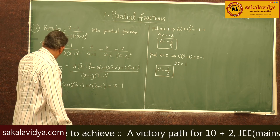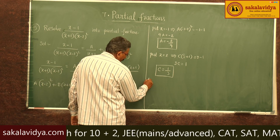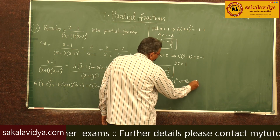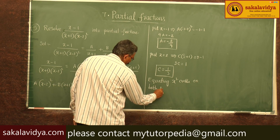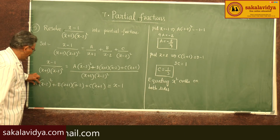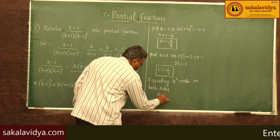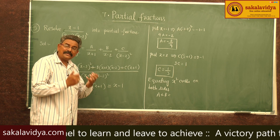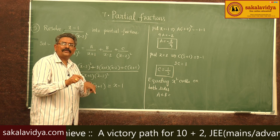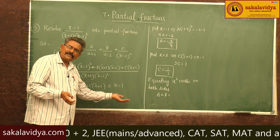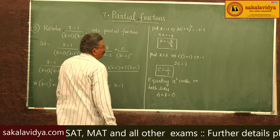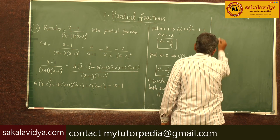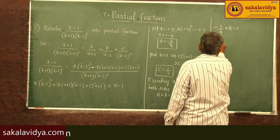Now let us compare the x squared coefficients on both sides. Equating x squared coefficients: on the left side we get A plus B; on the right hand side, the x squared term is absent, meaning its coefficient is 0. So A plus B equals 0. Since A equals minus 2 by 9, we get minus 2 by 9 plus B equals 0, therefore B equals 2 by 9.